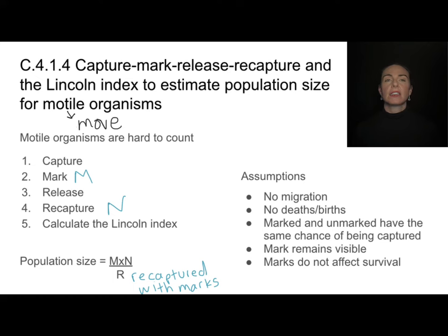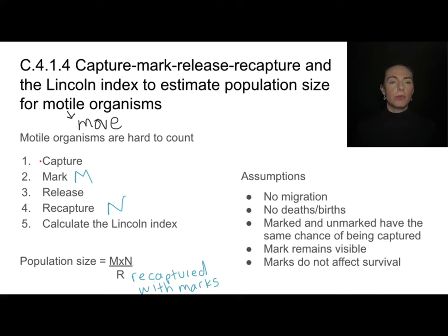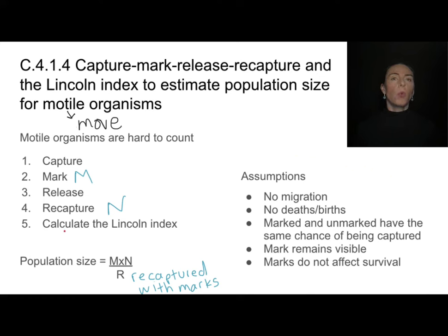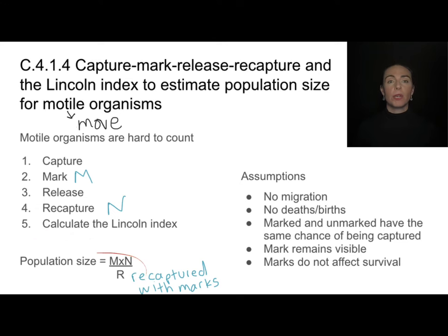The last assumption is that the marks do not affect survival. It's possible that a tag placed on a fish causes it to be more easily caught by predators. All of these assumptions are things we must consider when evaluating the reliability of the population size estimate obtained using the Lincoln index.